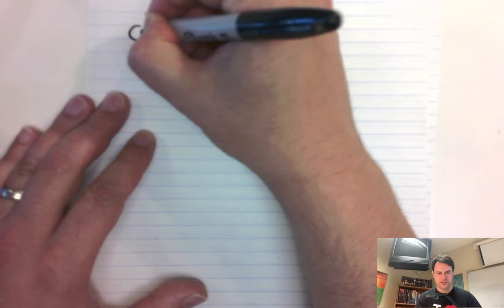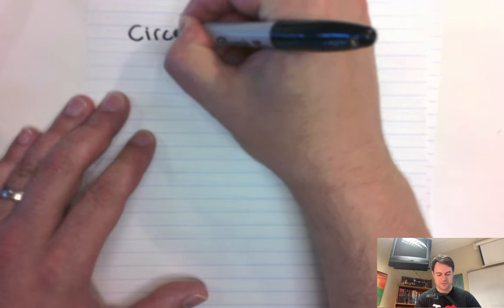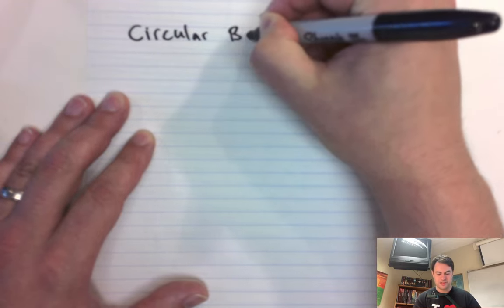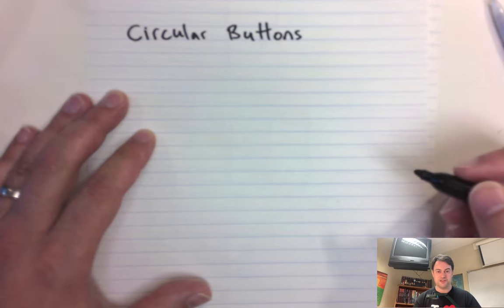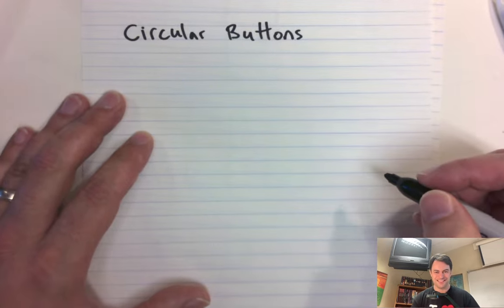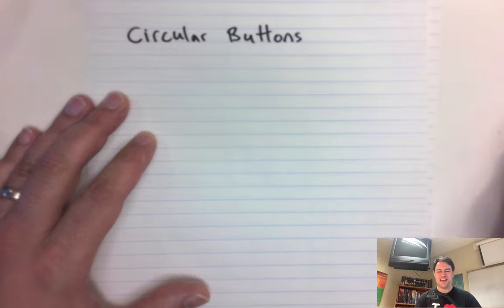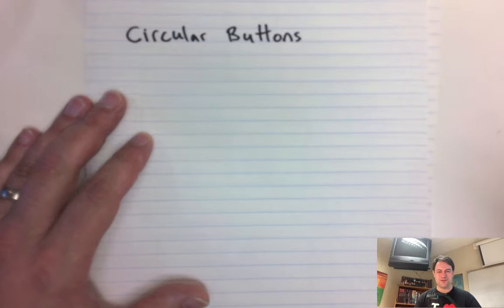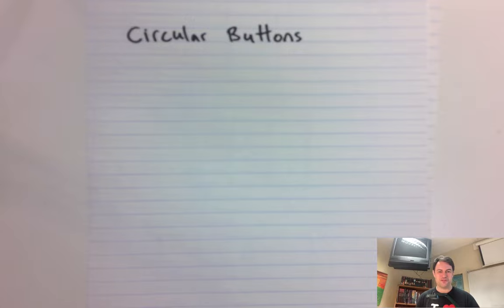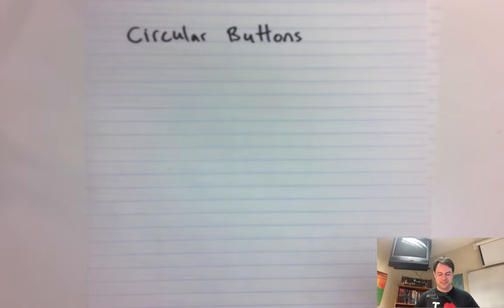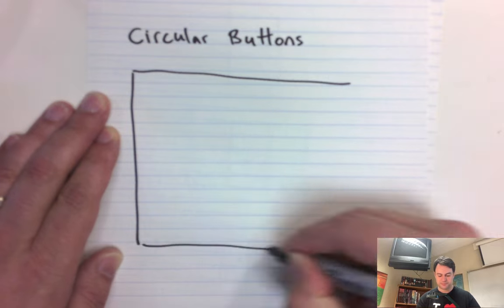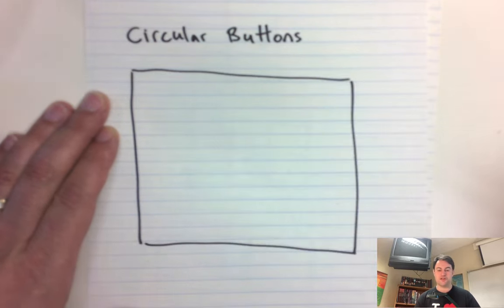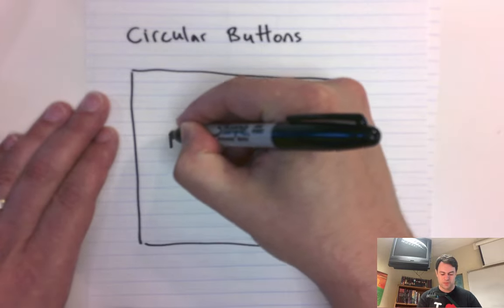We'll start off with circular buttons. So circular buttons are pretty common. Even in processing, you can see we're using circular buttons without focusing. It's a little shaky. So they're really easy to program and that's why we've started with circular buttons. So basically, if we have a sketch here, I'll just try to draw a basic sketch, and we have a circle that we want to see if our mouse is touching, we can do that math.